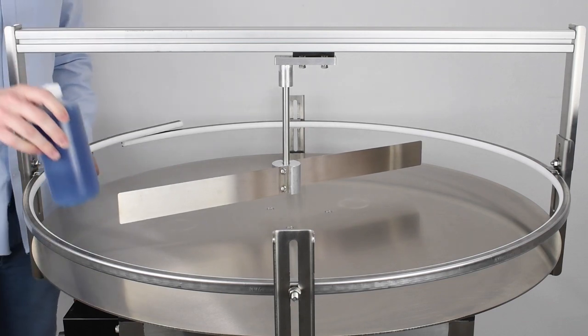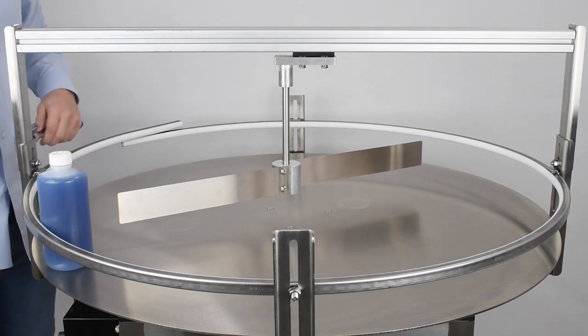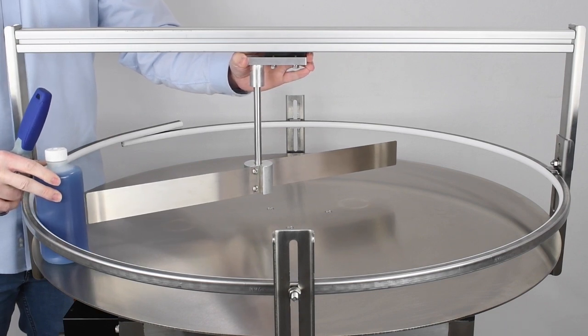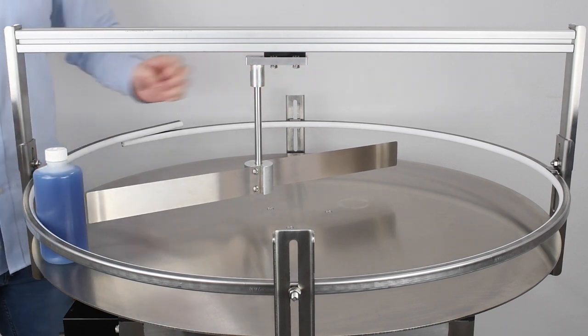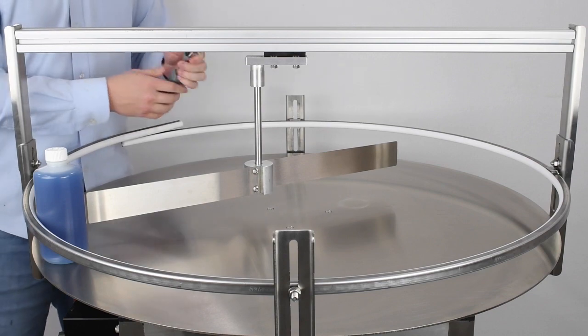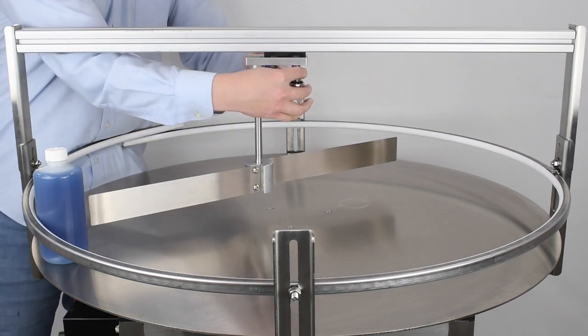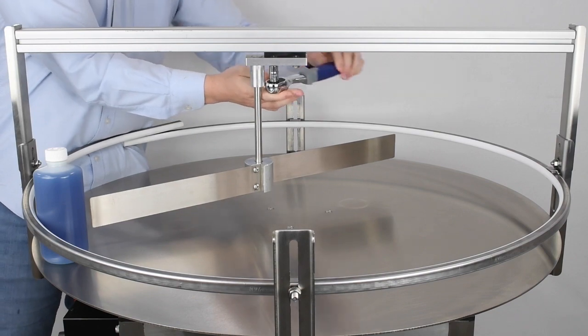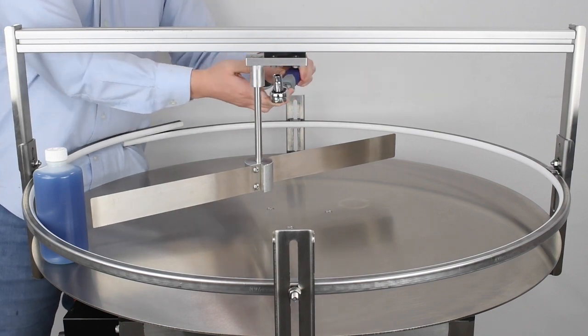To finalize this position, add a container to the table against the accumulation guide rail, across from the unscrambler blade. Adjust the blade so that there is approximately a centimeter of space between it and the container. Once the unscrambler blades are in the correct position, tighten the screws to lock the unscrambler in place using the 7-16 wrench.